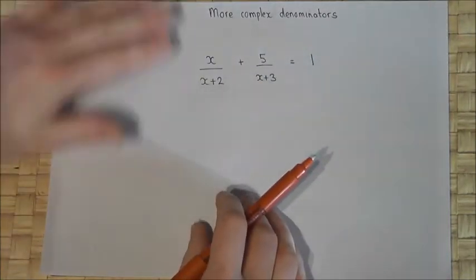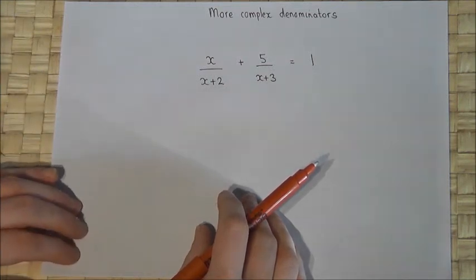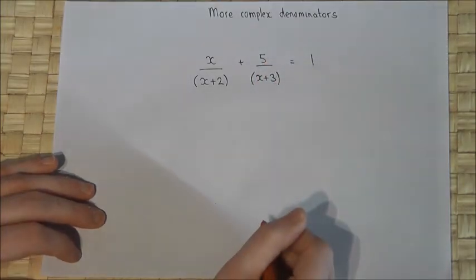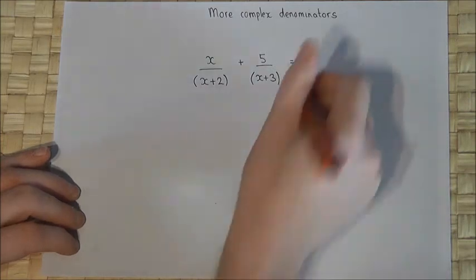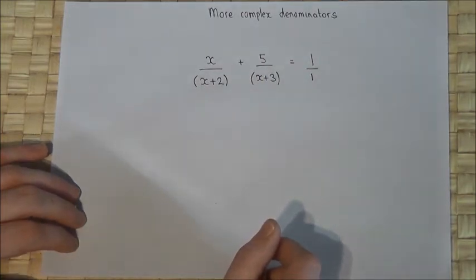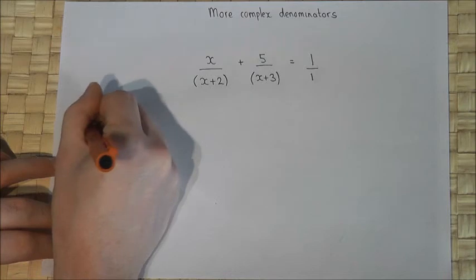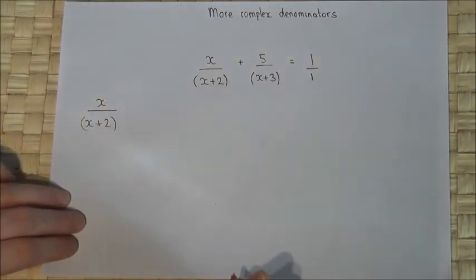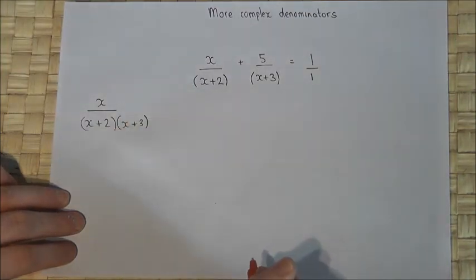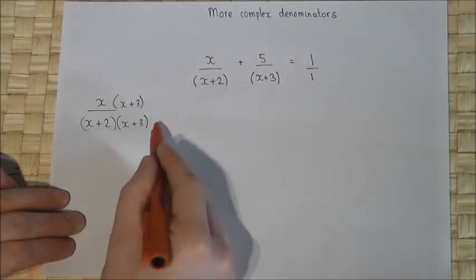This final part looks at a more complex equation applying all techniques from the video. Step one: put brackets around the terms. Then write the 1 as 1 over 1, and make all fractions have the same denominator. Looking at the first fraction, x over (x+2): I'm going to introduce an (x+3) in the denominator, but whatever I put at the bottom I must put at the top, so I force the (x+3) into the fraction.